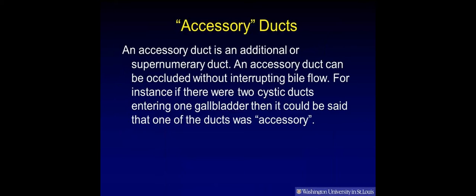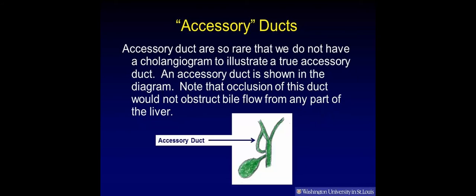Accessory ducts: An accessory duct is an additional or supernumerary duct. An accessory duct can be occluded without interrupting bile flow. For instance, if there were two cystic ducts entering one gallbladder, then it could be said that one of the ducts was accessory. Accessory ducts are so rare that we do not have a cholangiogram to illustrate a true accessory duct. Note that occlusion of this duct would not obstruct bile flow from any part of the liver.